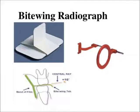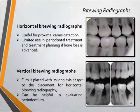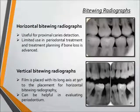Next is the bitewing radiograph, which is taken to visualize the crowns of posterior teeth and the height of alveolar bone in relation to the cementoenamel junction. There are two types: horizontal bitewing radiograph, useful for proximal caries detection and with limited use in periodontal treatment planning if bone loss is advanced.